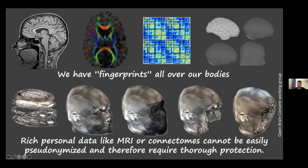So why do we need protection for health data? The problem is that an MRI dataset — basically every voxel of it is like a fingerprint. Every voxel contains such high-dimensional information, such deep information about the human behind this data, that you cannot really pseudonymize or anonymize it. Removing the face doesn't solve the problem.